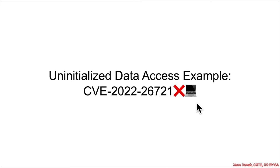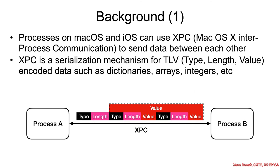Let's look at an XPC vulnerability. The background here is that in macOS and iOS, there's a thing called XPC, which stands for interprocess communication, and it's used to send information between different processes. It's basically a serialization mechanism for type-length-value (TLV) type data, and that encodes things like dictionaries, arrays, integers, and other data types.